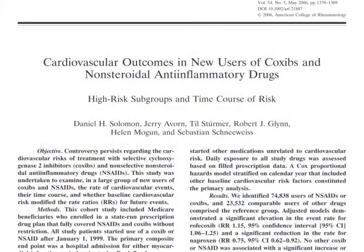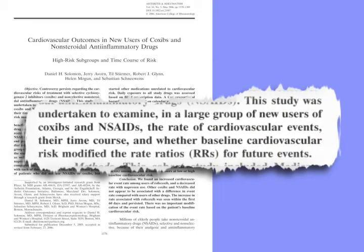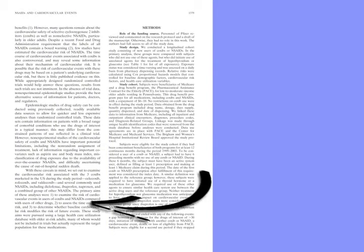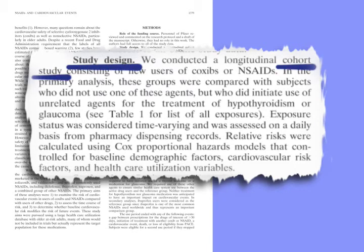So now let's do some examples. In your manila folders are three studies. Let's first look at the one by Solomon and colleagues, entitled 'Cardiovascular Outcomes in New Users of COXIBs and Non-steroidal Anti-Inflammatory Drugs.' The purpose of this study was to examine in a large group of new users of COXIBs and NSAIDs the rate of cardiovascular events, their time course, and whether baseline cardiovascular risk modified the rate ratios for future events. Identifying the study design is usually straightforward — there is usually a statement early in the methods section that identifies it. Here, it is in the second paragraph, clearly identified by the subheading 'study design.' This is a cohort study, as also identified in the abstract. Not all papers will give such a straightforward statement of design, so it is wise to look deeper.